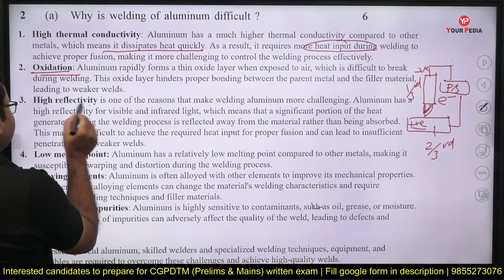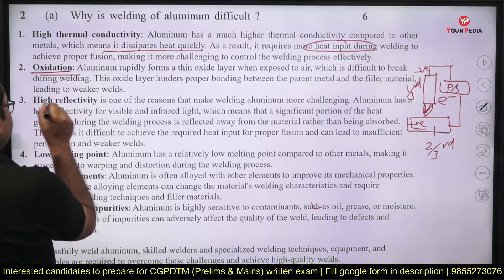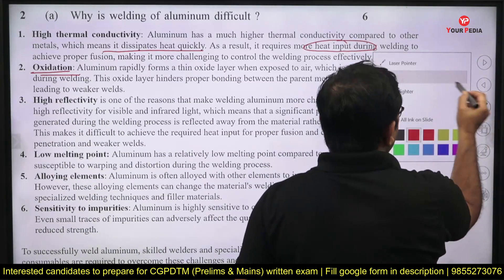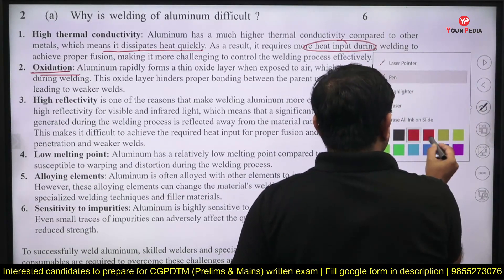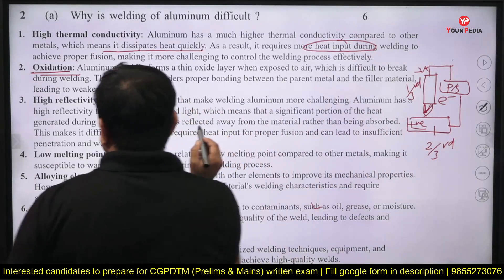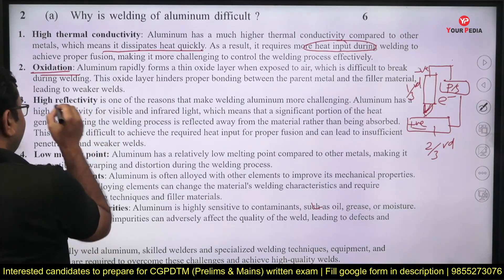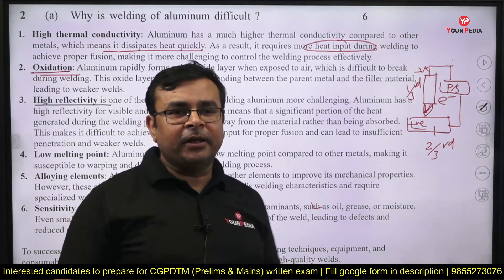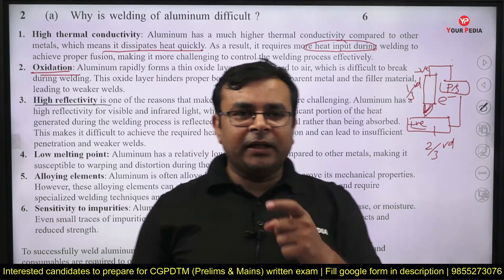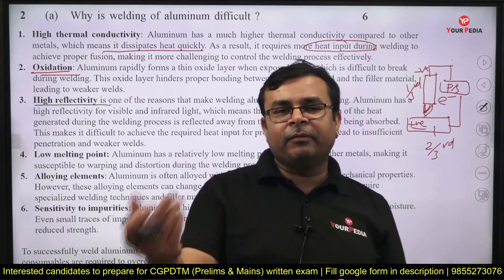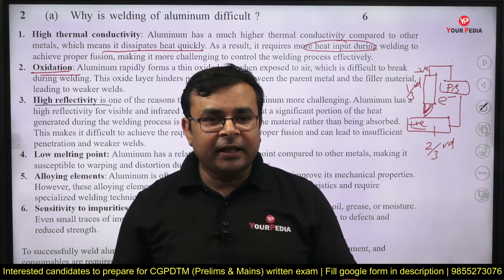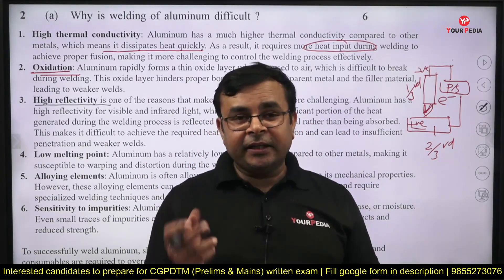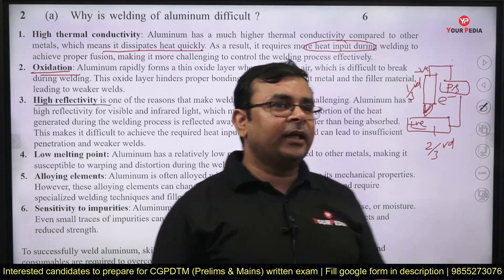Another major challenge is high reflectivity, which is a very significant challenge in the welding of aluminum alloy because aluminum is a highly reflecting material. Suppose you weld this material with the help of electron beam or laser beam — it definitely reflects those beams, so again it is very difficult to weld.